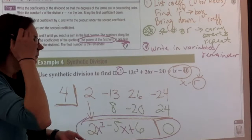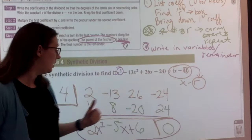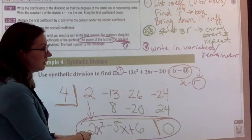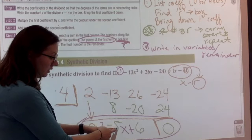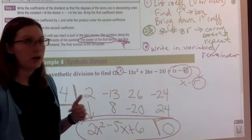So to recap: our coefficients are written here. We rearrange the divisor so it looks like x minus r, and we put our r value — which happens to be the opposite sign of what you might think — in the box. Bring down your first coefficient, multiply these, carry it over, combine like terms. Multiply, carry it over, combine like terms. Multiply, carry it over, and continue until you're finished. Then plug in your variables in descending order for one power less than the degree of your dividend.